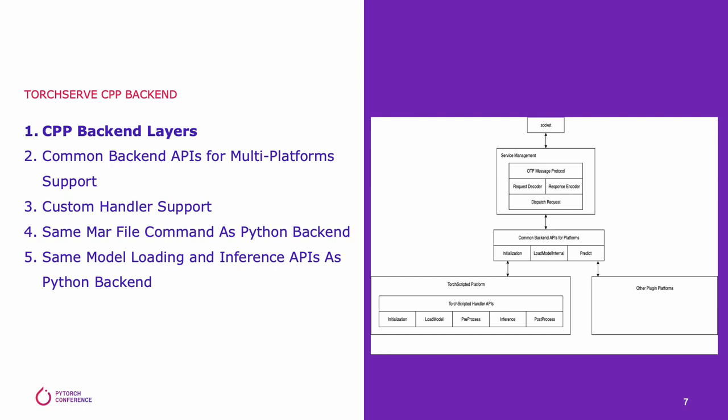The third layer is a common back-end API to support different machine learning plugins. By default, TorchServe provides a TorchScript back-end. The bottom layer is the machine learning platform handler API for customer model loading, pre-processing, and inference. The bottom two layers are highly related to TorchServe users, same as the Python back-end.